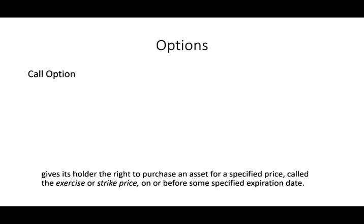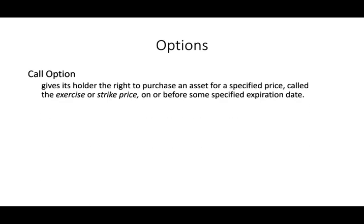Let's look at options. We have two types: call options and put options. A call option gives its holder the right — and it's very important to understand this is the right, not an obligation. The right means I have the right to do something but I don't have to do it. If I want to do it I can, simply put.